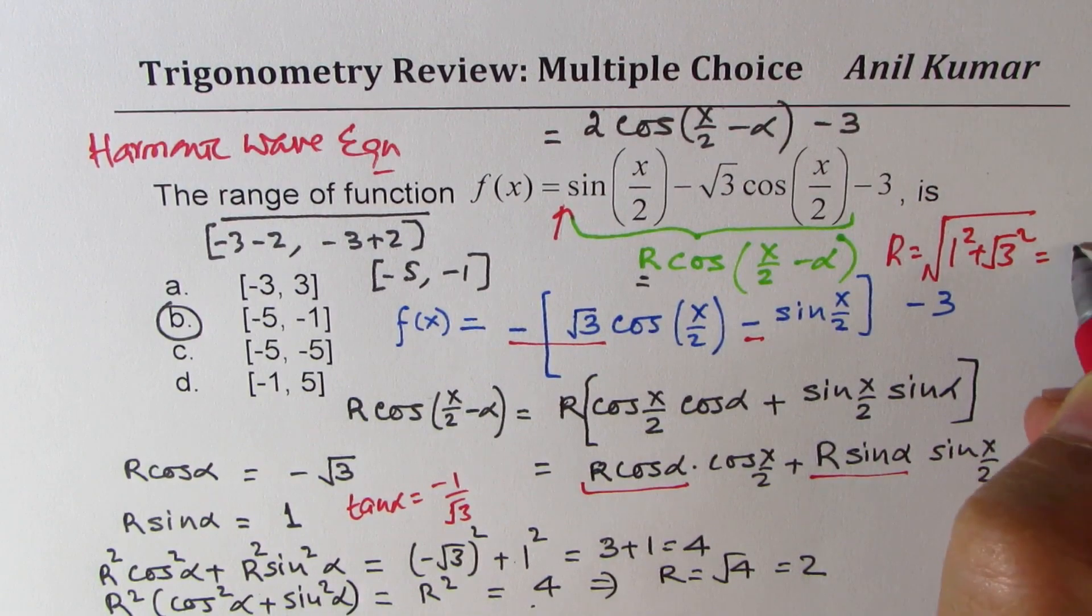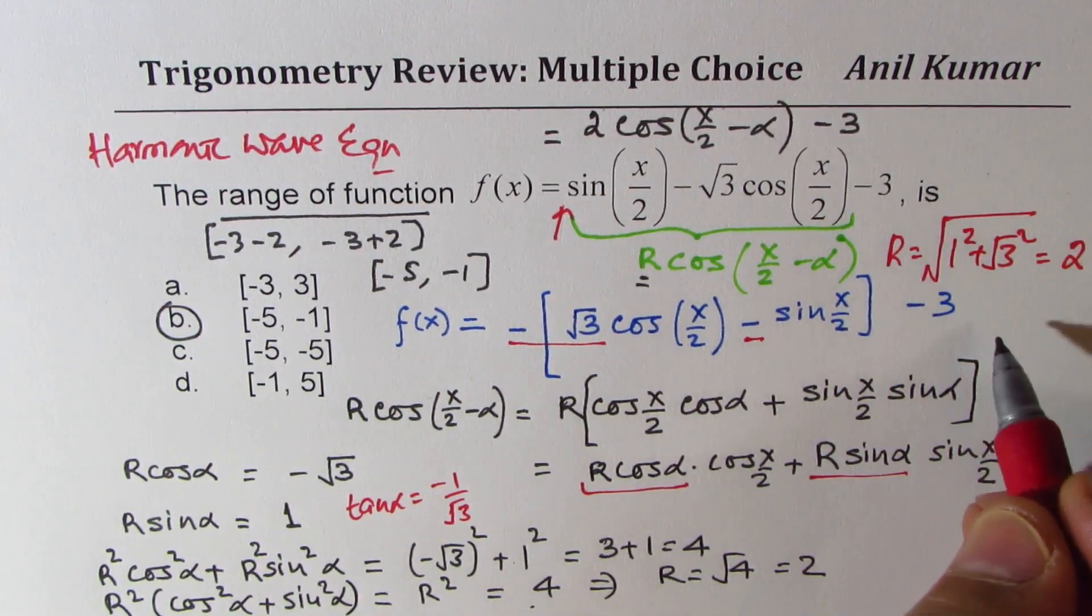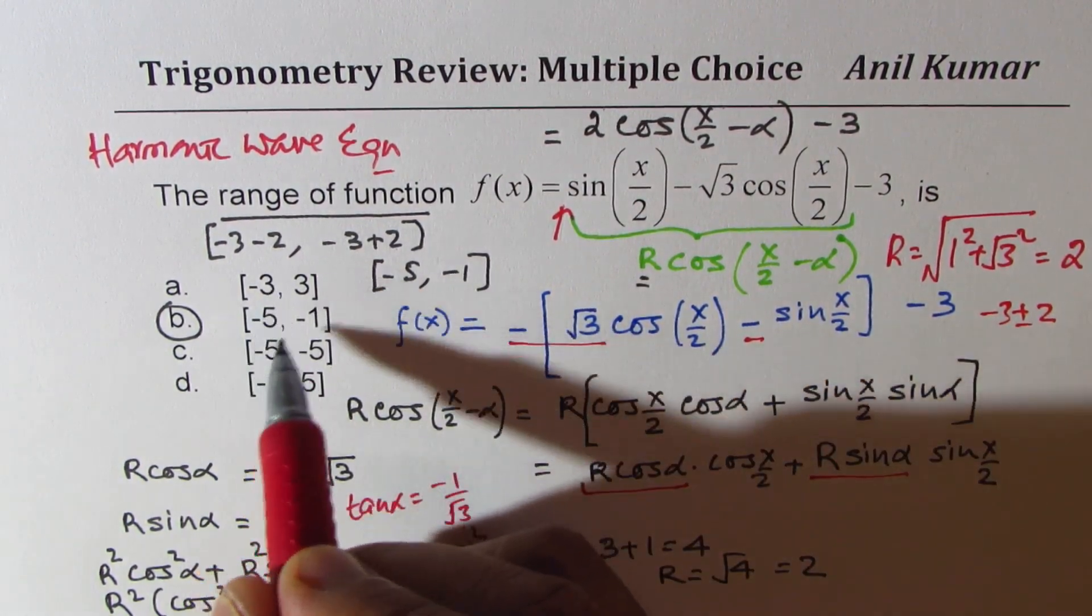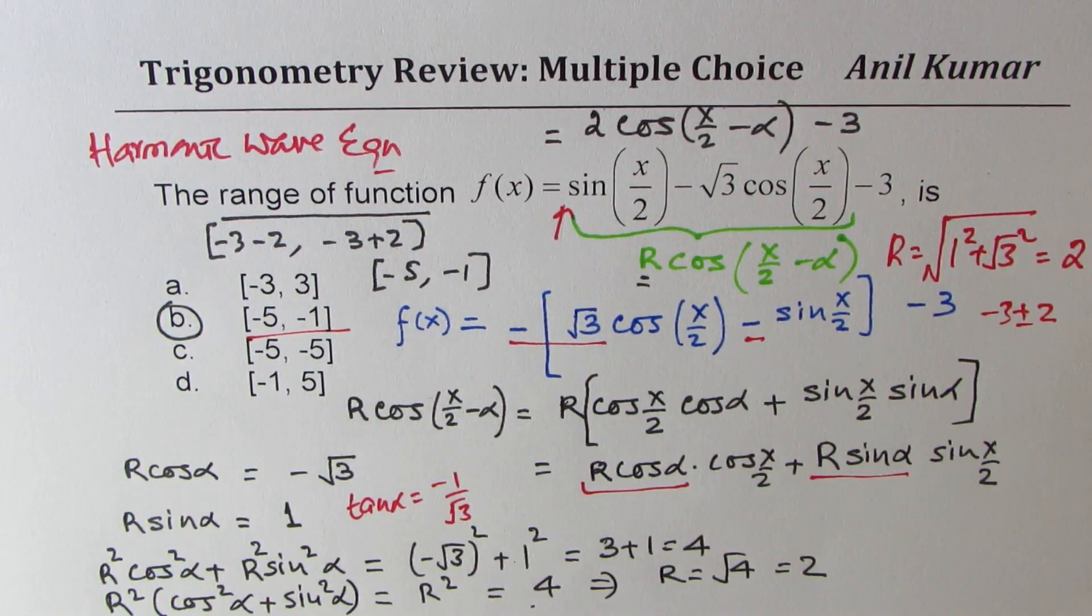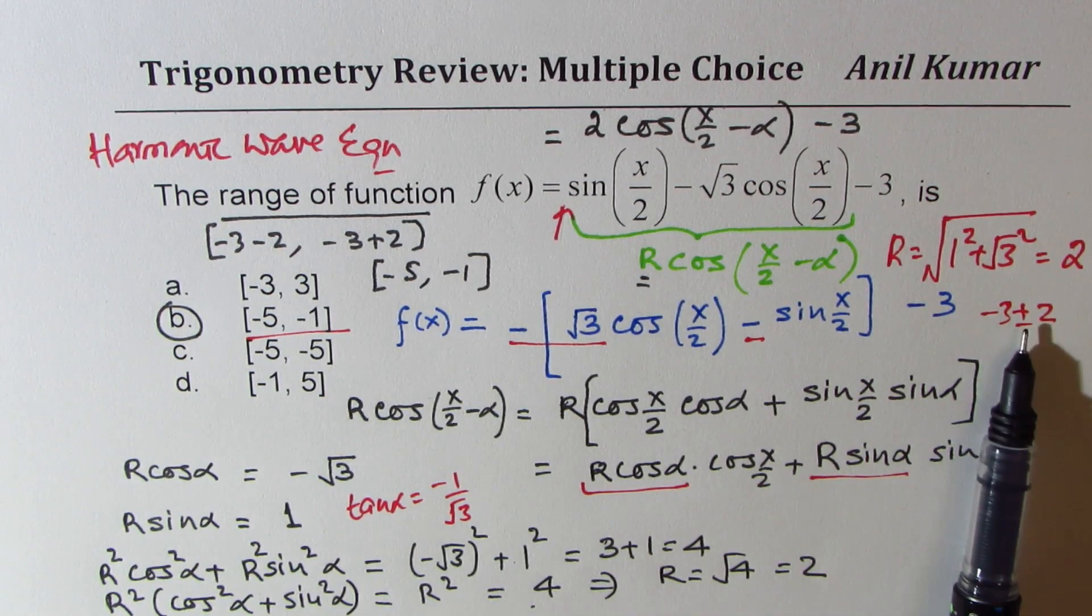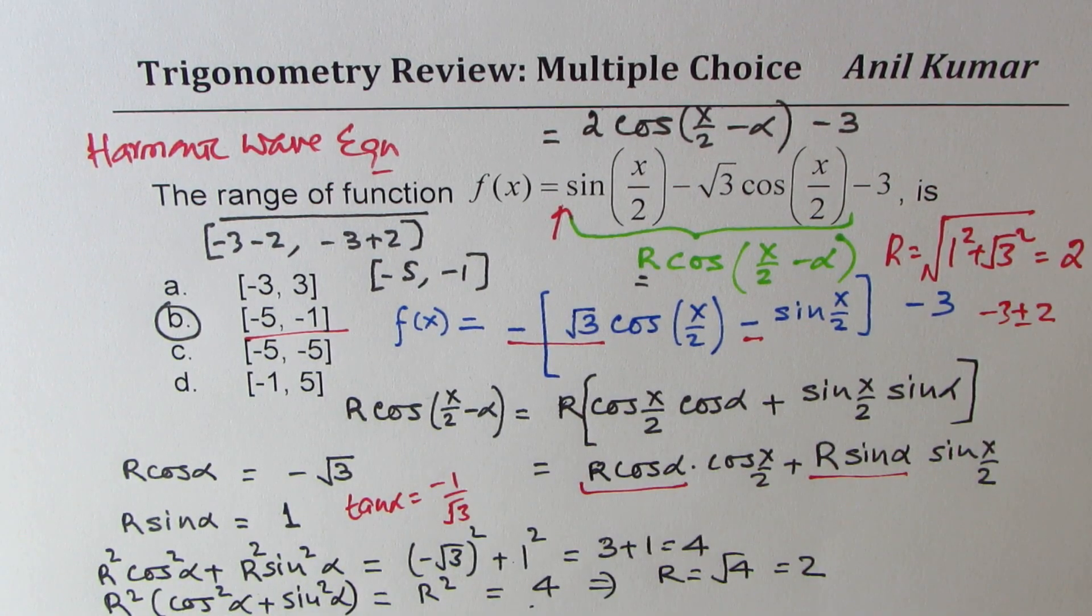So from minus 3, if you do plus minus 2, you get your range, which is minus 5 to minus 1. This multiple choice question could be answered very easily by finding R as equal to square root of coefficients - 1 squared plus square root 3 squared, which gives us 2. It is good to know this since multiple choice questions at times could take a lot of time, which you may not have in a competitive exam, especially like IIT JEE.